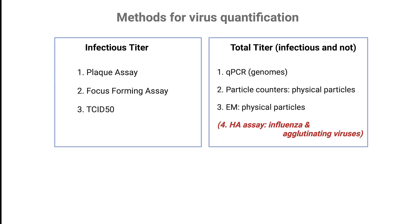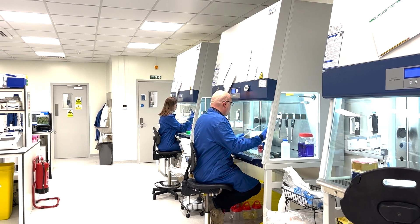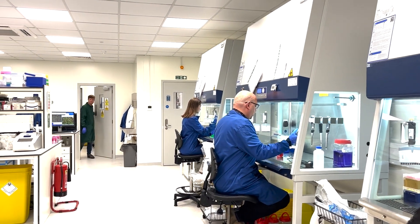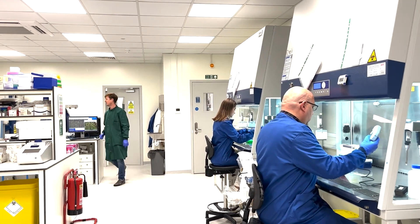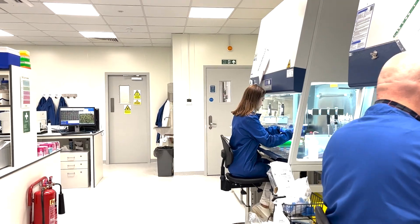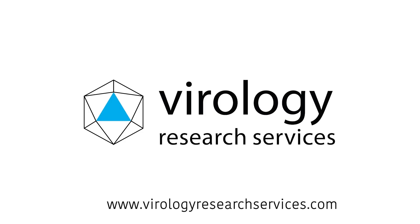In summary, accurately measuring both infectious and total virus titers is crucial for advancing virology research and improving diagnostics. Each assay we've discussed offers unique benefits tailored to specific viruses and research needs. To further explore these methods, you can watch our assay-specific videos that go into fine detail. We hope you found this video helpful, and as always, best of luck at the bench!